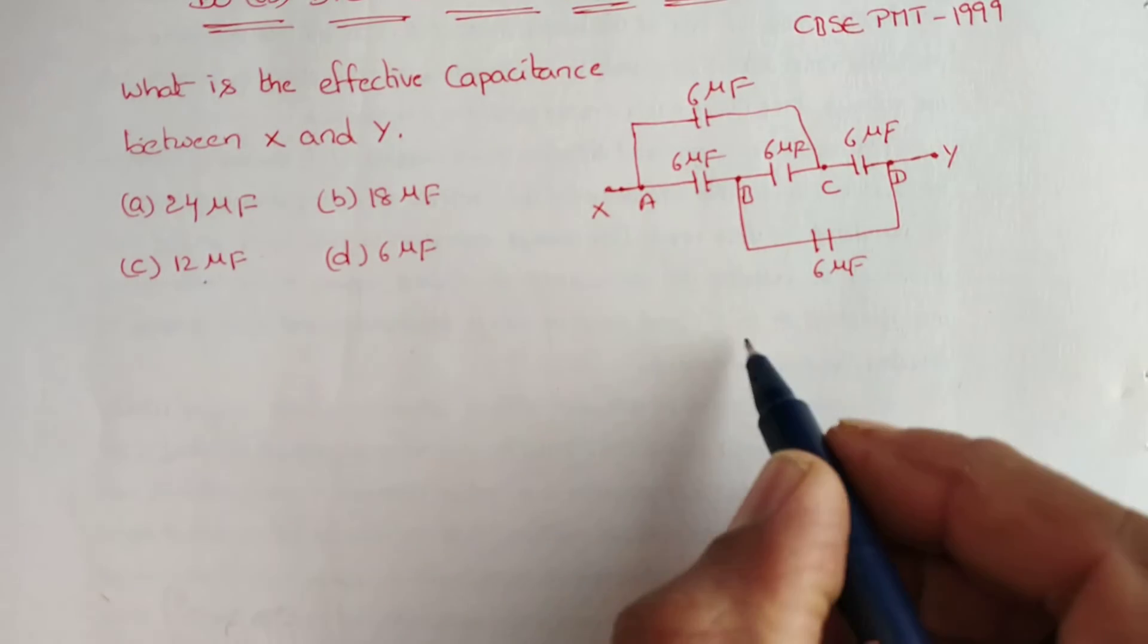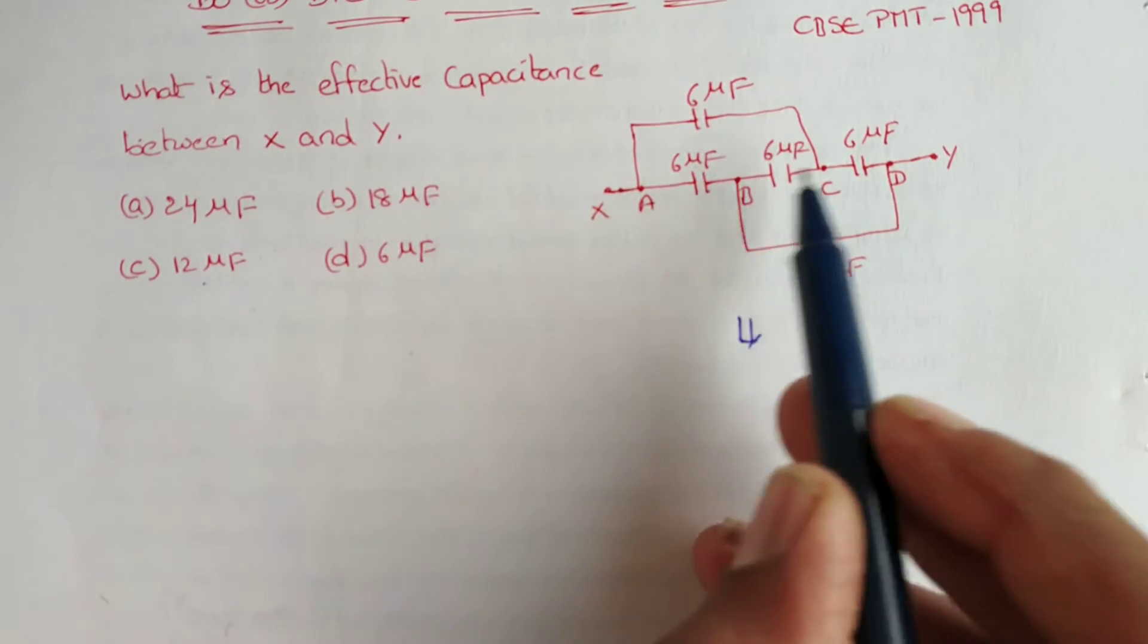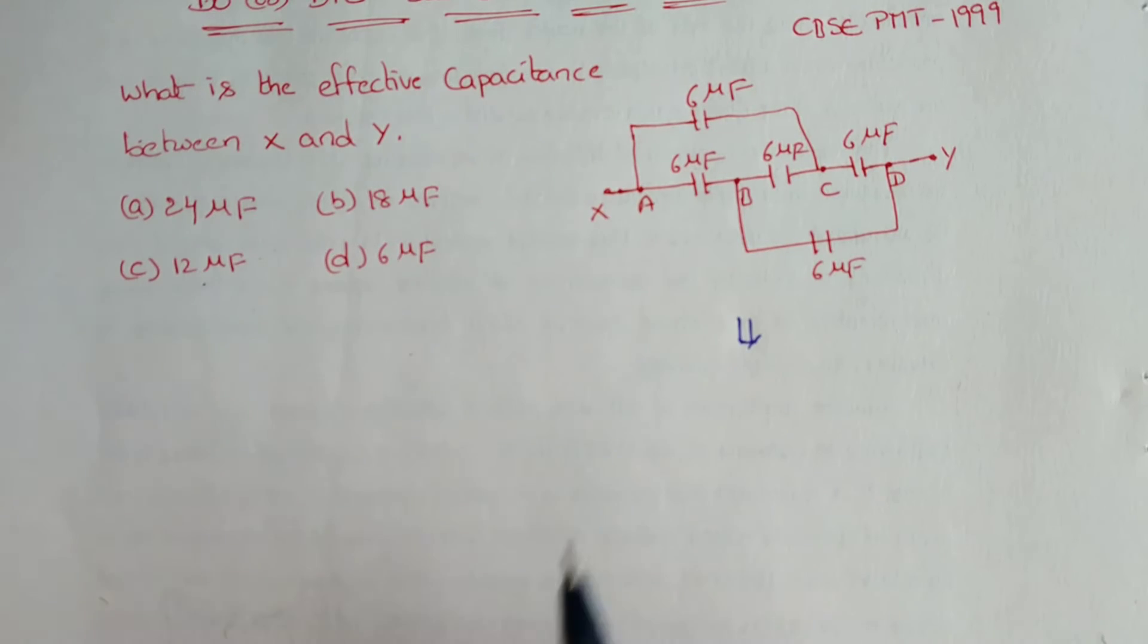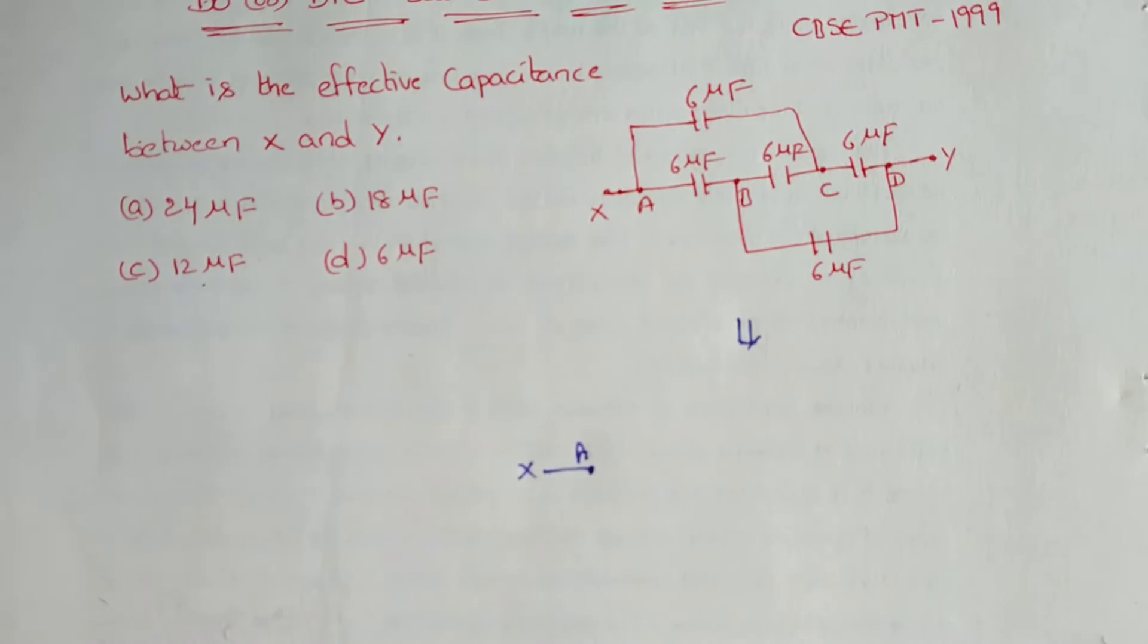Look here. For drawing this circuit, first we have to indicate A, B, C, D. They've already indicated them, so no need to worry. First take point A. This is X. And B we have to take downside. This is point B.